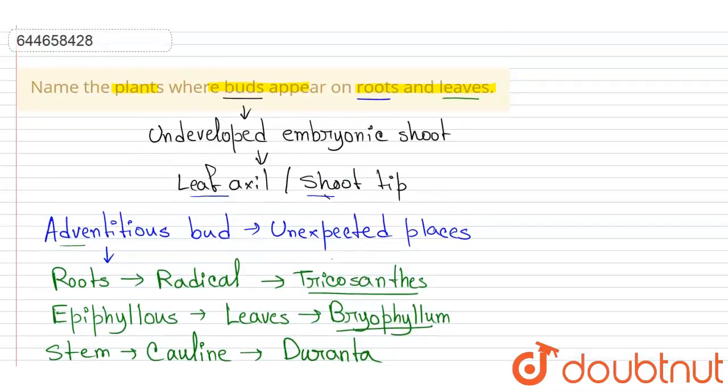So here, the plants where the buds appear on roots and leaves will be Trichosanthes and Bryophyllum. This is our answer here.